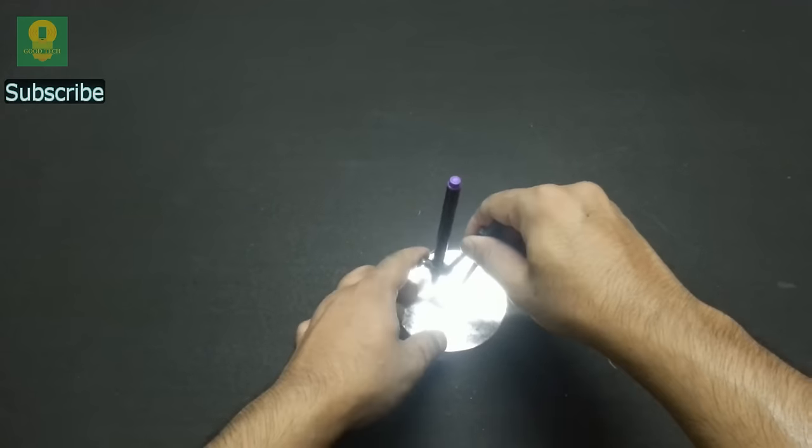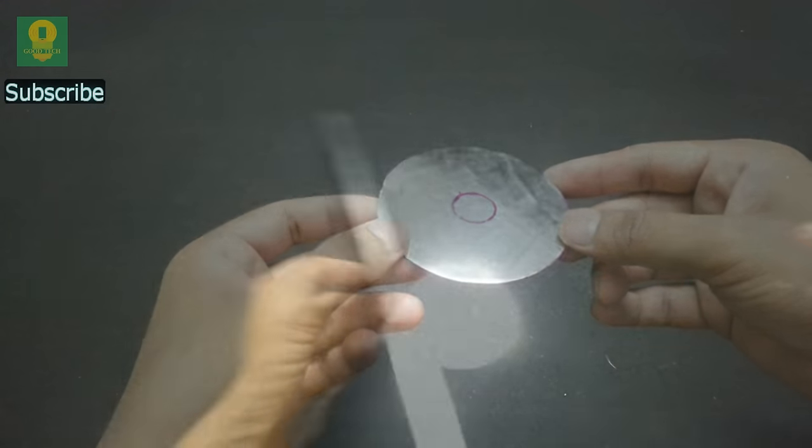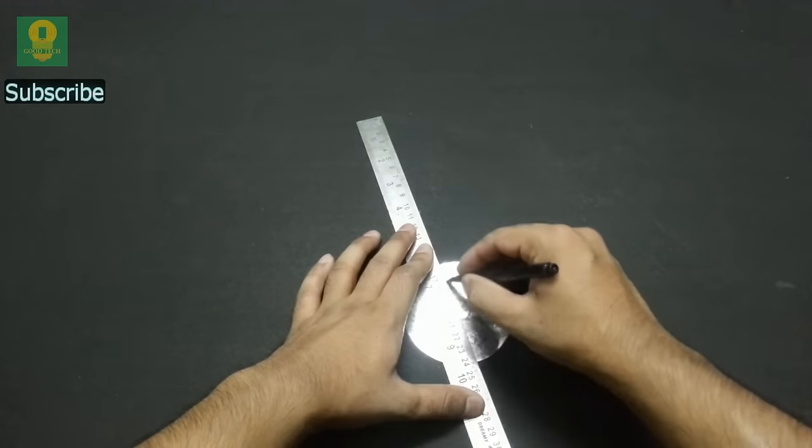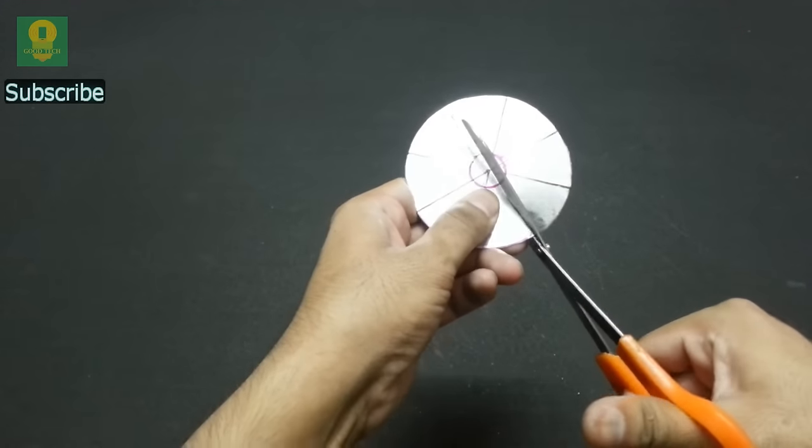Also draw a small concentric circle. Mark a line passing through the center. Using the line as reference, make 8 lines, each at an angle of 45 degrees. Cut the sheet along the lines to make 8 sectors.